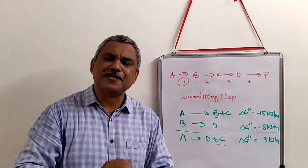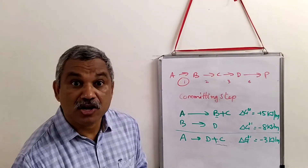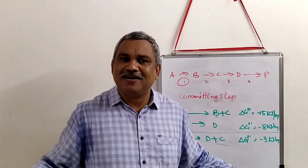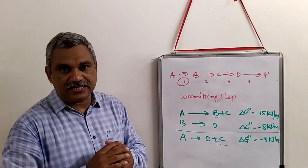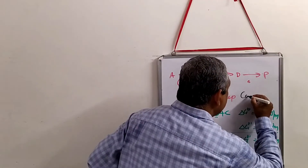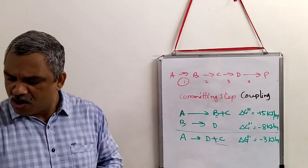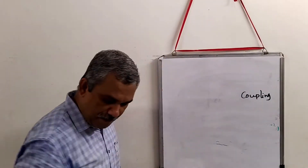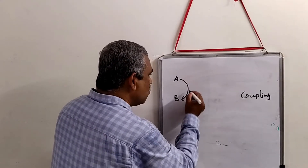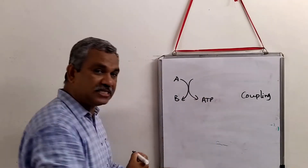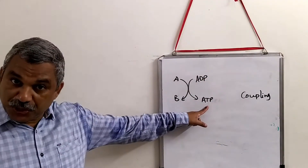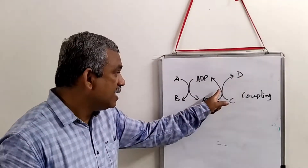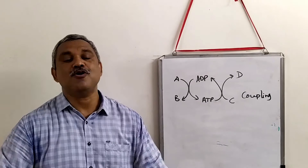Negative delta G values give reactions a direction. This concept of coupling of reactions is used extensively in metabolic reactions. When a reaction converts A to B and releases energy — for example, producing ATP from ADP — that ATP is then utilized to drive another reaction, such as converting C to D. That is the meaning of coupling of reactions.